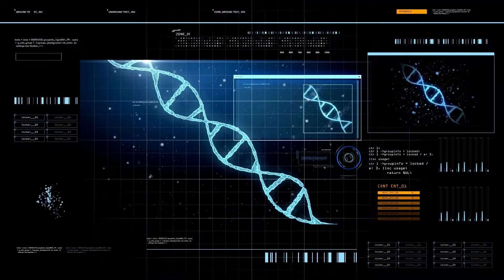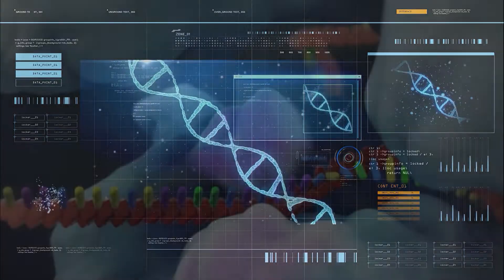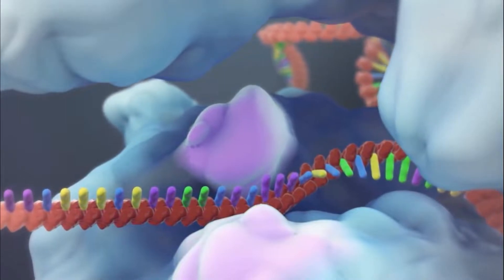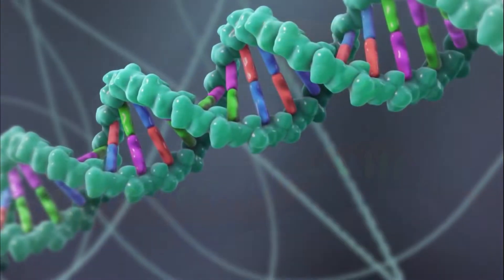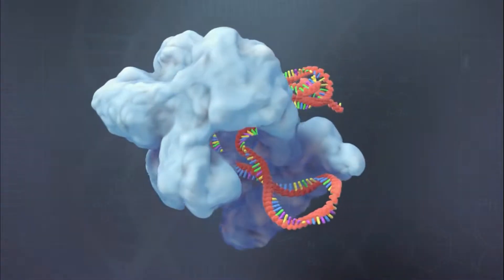Prime editing, which snips rather than chops DNA, has been updated to edit up to 10,000 DNA letters in a variety of cells with pinpoint accuracy. It is possible to rewrite entire genes via twin prime editing. These improved CRISPR technologies now allow researchers to correct genetic defects that were previously untreatable.